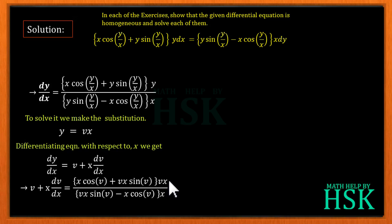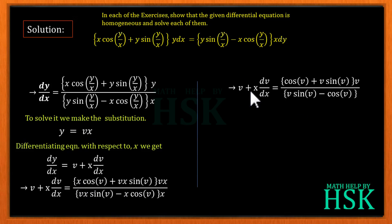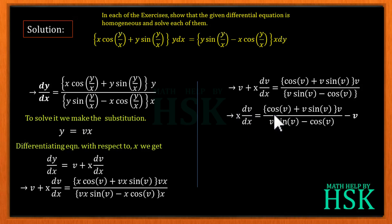After substitution, the x terms cancel — since y = vx, x cancels from numerator and denominator in the trig arguments. We get v + x·dv/dx equals [cos(v) + v·sin(v)]·v over [v·sin(v) − cos(v)]. Taking v to the right side gives x·dv/dx equals [cos(v) + v·sin(v)]·v over [v·sin(v) − cos(v)] minus v.